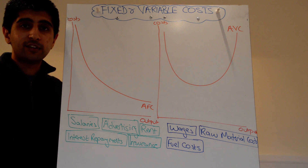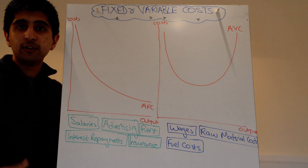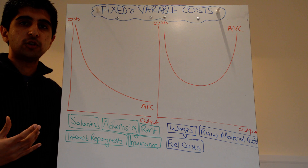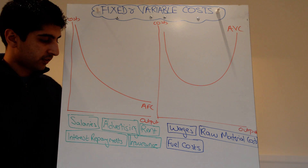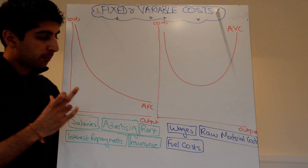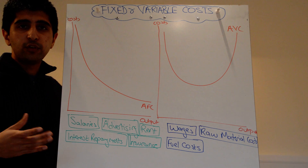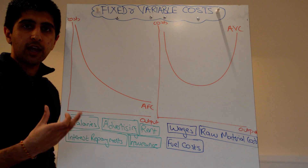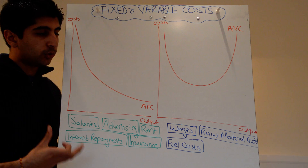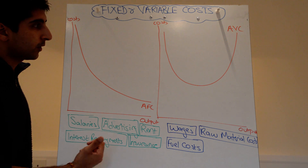Fixed salaries for staff over a given year — you have to pay a fixed salary regardless of how much you're producing. Advertising: it doesn't matter how much you're producing, you have to pay your advertising costs. Rent: regardless of how much you're producing, you have to pay the rent on your factory. Interest repayments, insurance — these are all costs that do not vary with output.